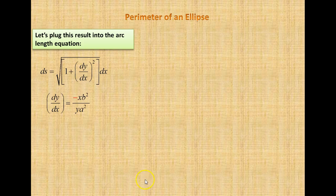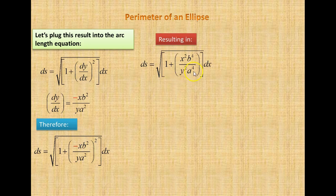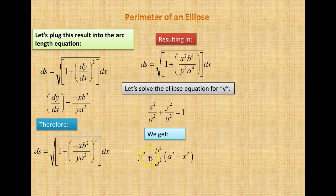Let's plug this result into the arc length equation. In the arc length equation we had the quantity dy over dx squared. From the ellipse equation, our dy/dx equals minus xb squared divided by ya squared. We plug that in and square it. Then let's solve the ellipse for y squared: y squared is equal to b squared over a squared times the quantity a squared minus x squared. We plug that into our arc length equation.